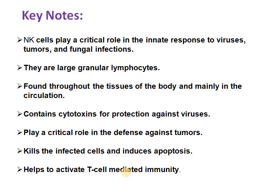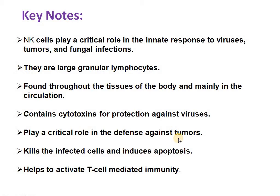Natural killer cells play a critical role in innate response, basically against viruses, tumors, and fungal infections. They are large granular lymphocytes, belonging to the lymphocyte family, larger in size, and found throughout the tissues of the body, mainly in the circulation. About 5 to 15 percent of circulatory lymphocytes are natural killer cells. They contain cytotoxins — chemicals toxic to cells — for protection against viruses and play a crucial role in defense against tumors.